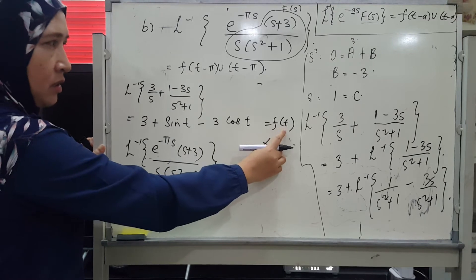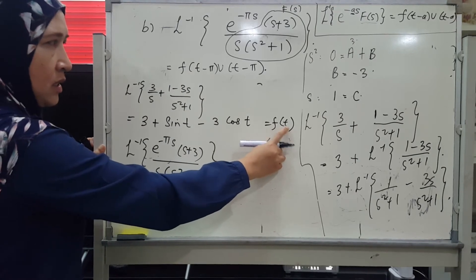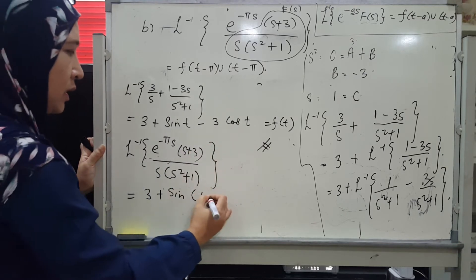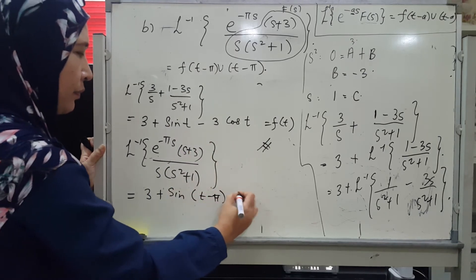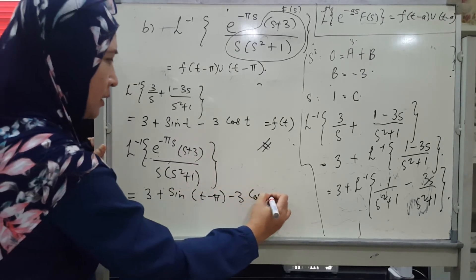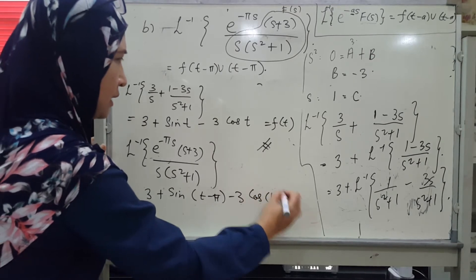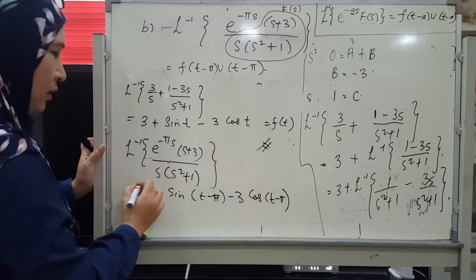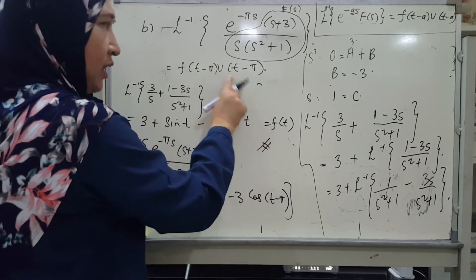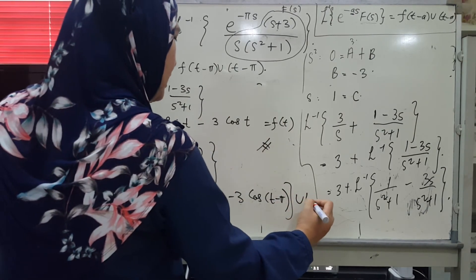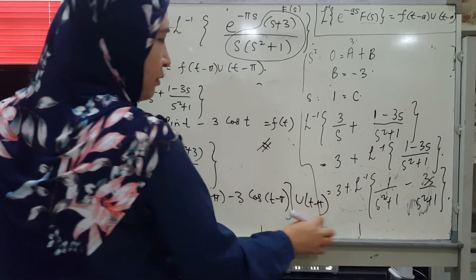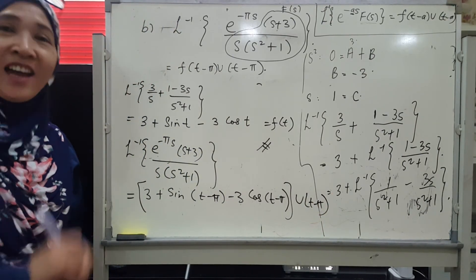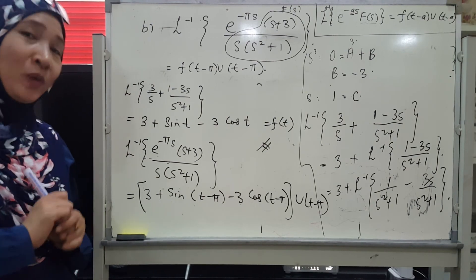So we have this f(t). That means u(t) now is t minus pi. So every t in this will be substituted by t minus pi — t minus pi. This is 7t. So together with this, don't forget this: u(t minus pi). We must have u(t minus pi) as our answer because our question doesn't solve this problem.